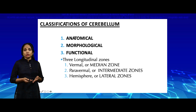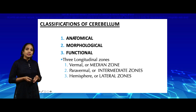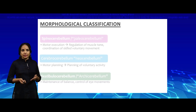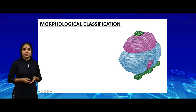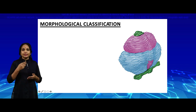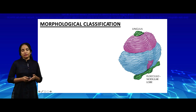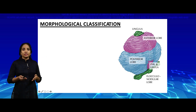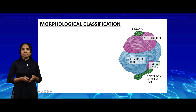The vermal zone lies along the vermis and is also called the median zone. The paravermal zone comprises two areas on either side of the vermis, and the lateral or hemispherical zones are the outermost. Looking at the morphological classification on a diagram of the cerebellum opened out, we can identify: the lingula and below that the flocculonodular lobe at one end; the anterior lobe lying in front of the fissura prima; and the posterior lobe. A small part of the vermis of the posterior lobe — the pyramid and uvula — is also noted.